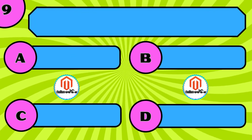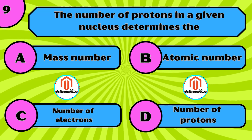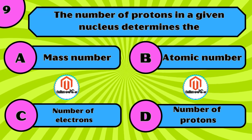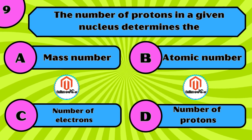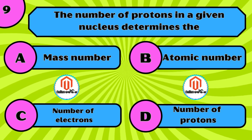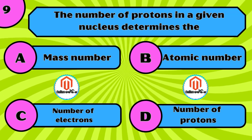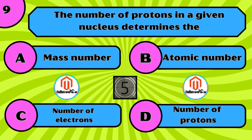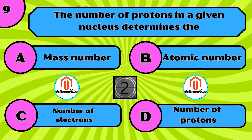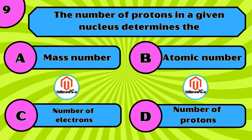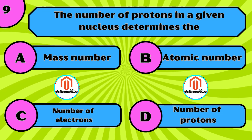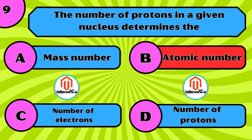The number of protons in a given nucleus determines the: A) mass number, B) atomic number, C) number of electrons, D) number of protons. The correct answer is B, atomic number.